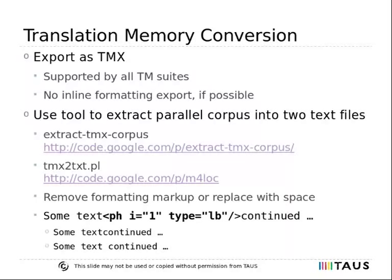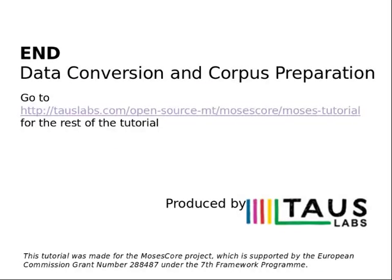The tools Extract TMX Corpus and TMX to Text are available freely for this conversion. These tools allow extracting a parallel corpus for a specified language pair. One aspect to keep in mind during markup removal is whether the markup should be removed or replaced by a space — this decision depends on the markup for the specific TMX source and is therefore dependent on the project data. This is the end of the data conversion and corpus preparation tutorial. For further tutorials, go to the web address shown on this slide. Thanks for your attention.